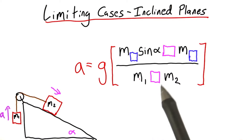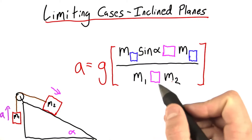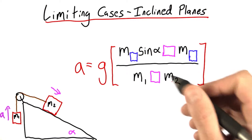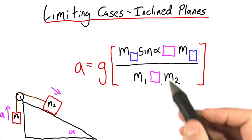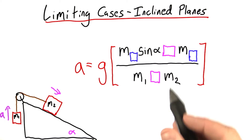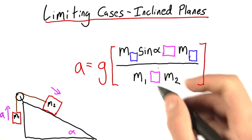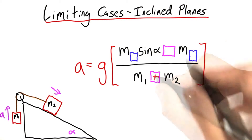The denominator has m1 either plus or minus m2. Well, it can't be minus, otherwise, if these masses were equal, you'd get zero in the denominator. I don't like dividing by zero.